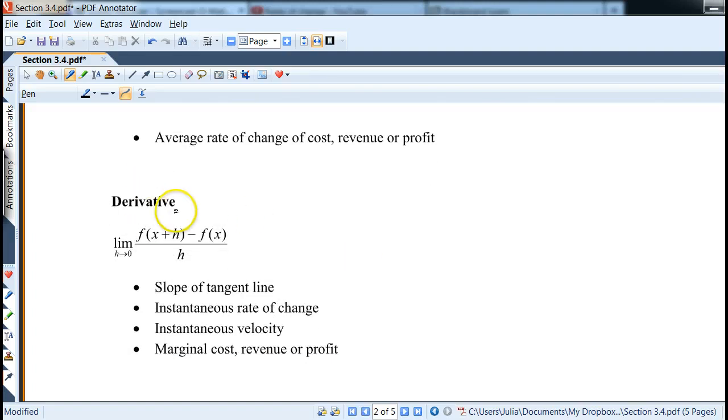Now derivative itself is same idea, this difference quotient, but with a limit attached to it. So these two points must be very close or as close as they can get to each other, which is what represents by limit as h goes to 0.